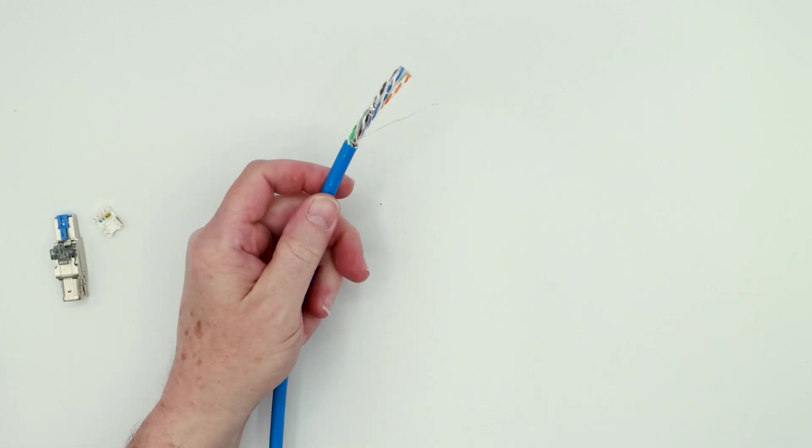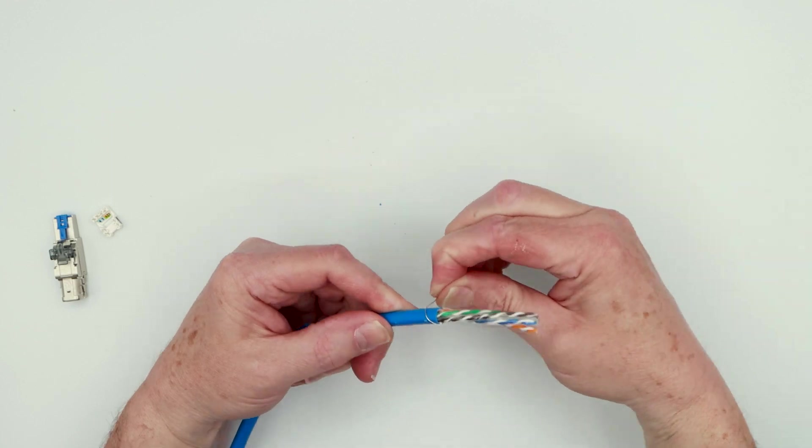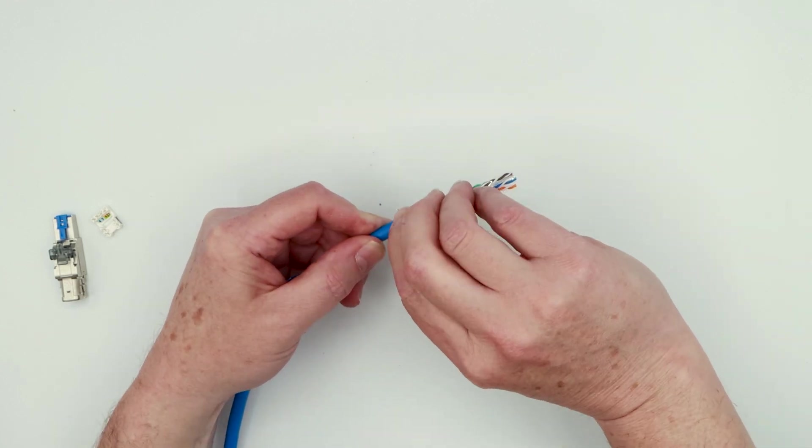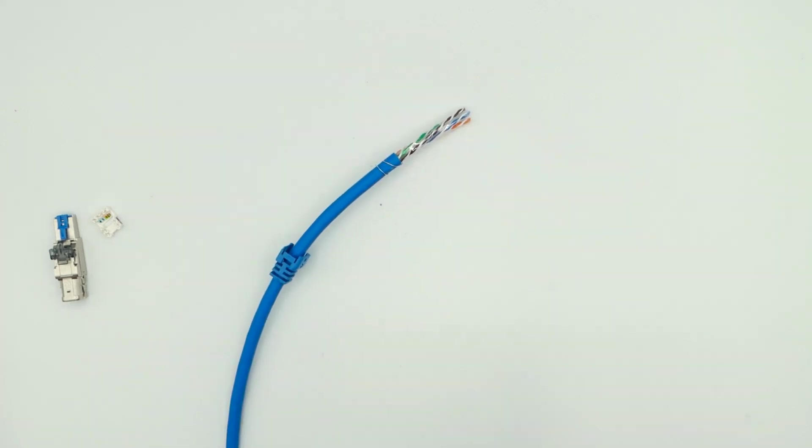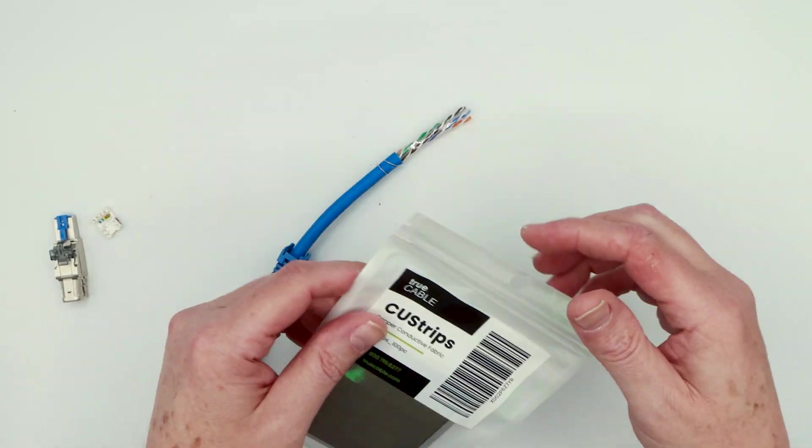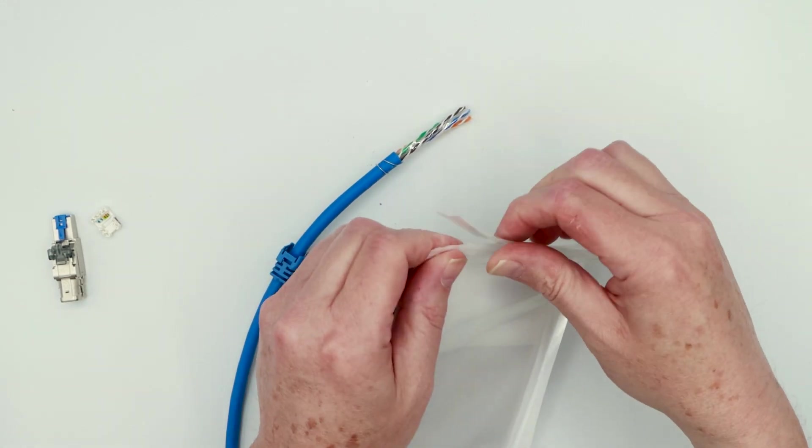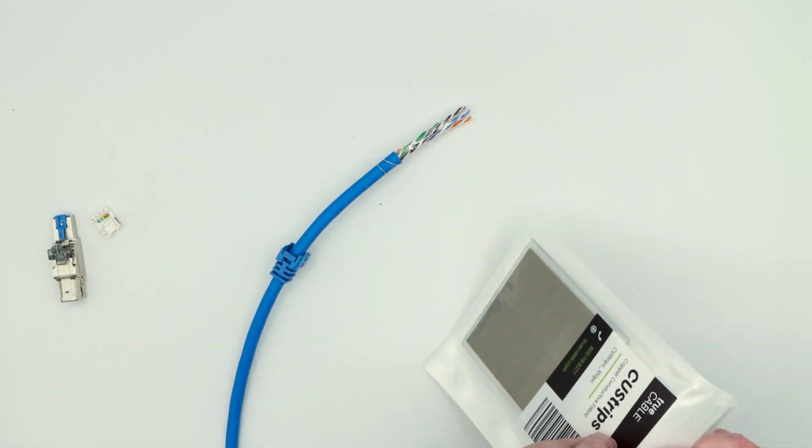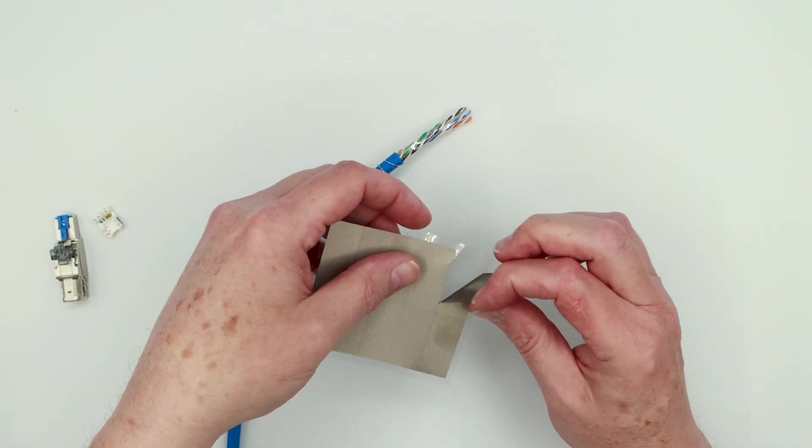And now that's leaving you with a ESD drain wire. So take that and wrap it around the cable jacket backwards, like so. And then this is where our copper fabric strips come in. These copper fabric strips have a conductive adhesive, and they're extremely useful for tacking down that drain wire. Simply take it off. Take one of them off here like this. Peel them off like so.